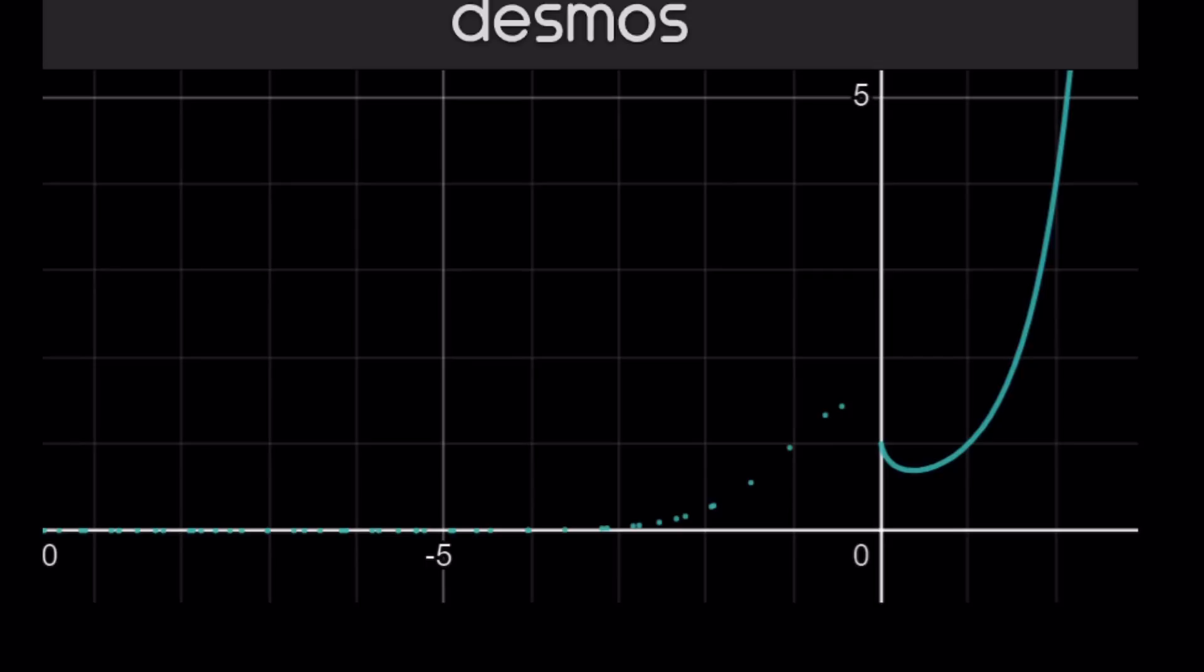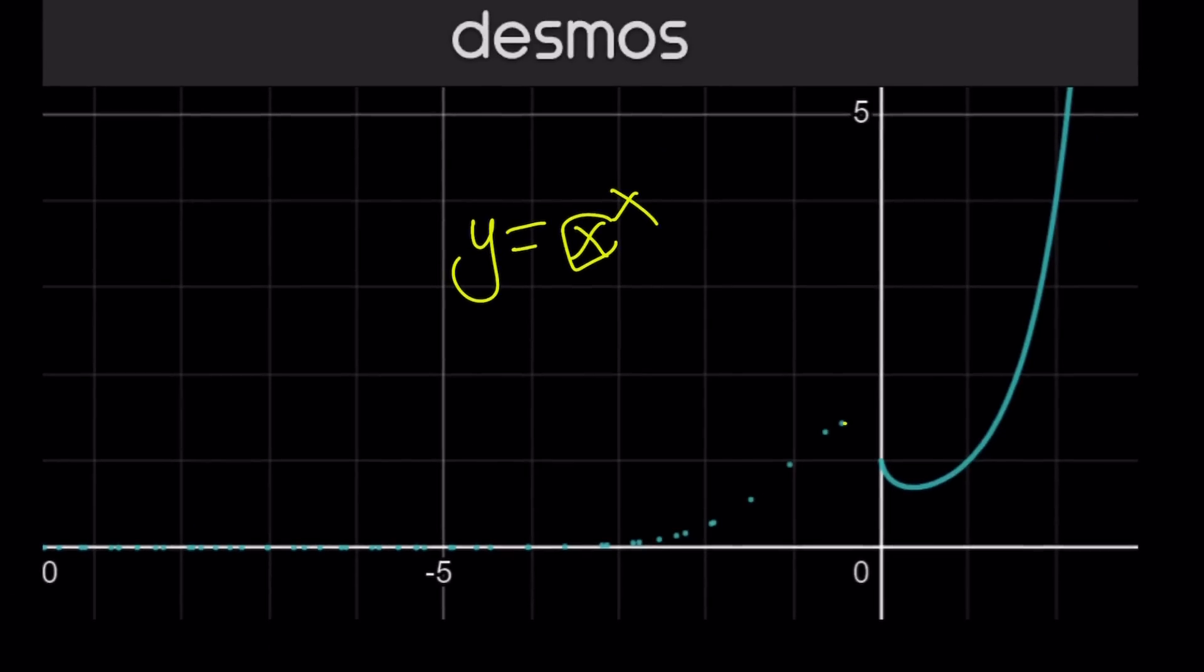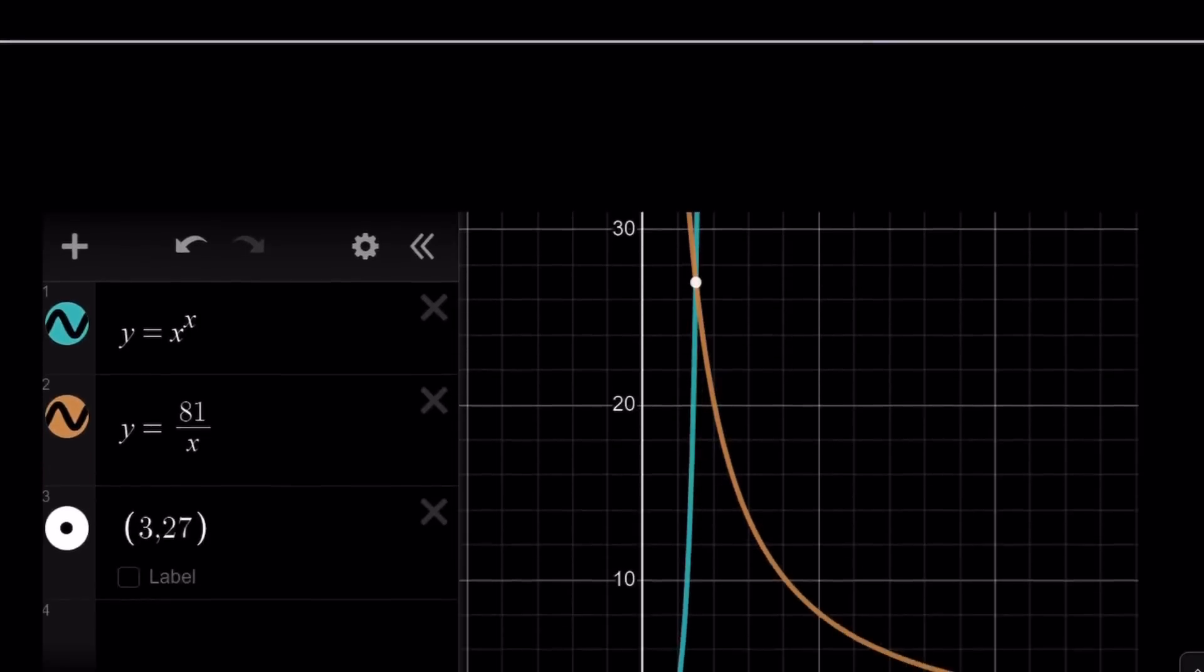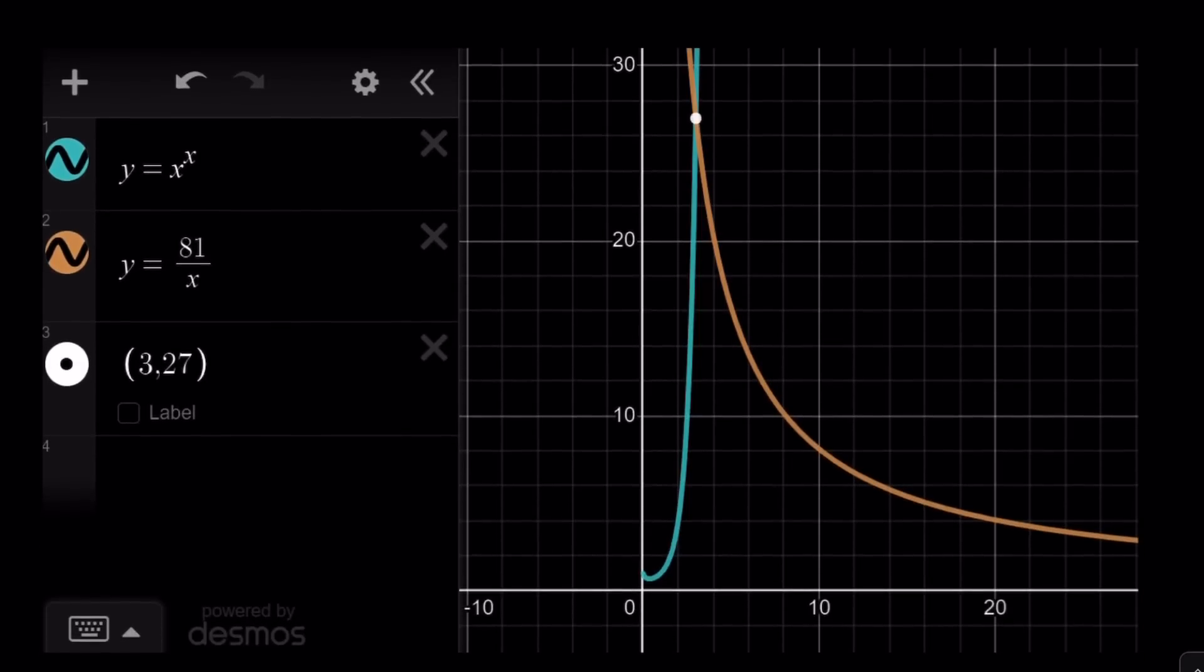But notice that, well, I wanted to show you the graph of y equals x to the x on Desmos without any zoom. Notice that these dots include negative x values. So when x is negative, the function goes crazy. It gives you a bunch of scattered dots. And you can see them even on the x axis. Look at that. It's kind of cool, right? Anyways, let's take a look at the graph of these two functions. They intersect at 3, 27. Therefore, x equals 3 is the only solution.